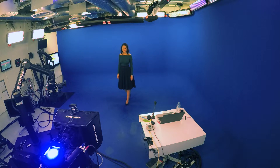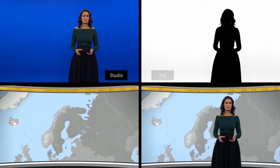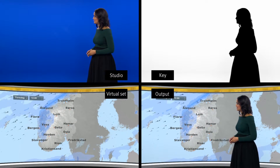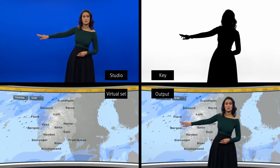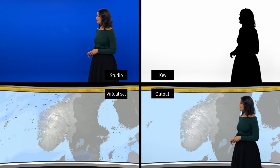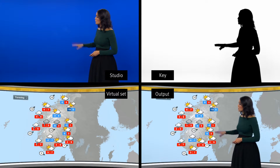TV2 Norway has chosen to use blue for their chroma key wall. We have found that in our small studio we benefit from using a blue screen instead of green, because the spill light bouncing off the wall — it's more acceptable to the audience to have a slightly blue presenter than a slightly green presenter. That being said, a green wall would technically be better for keying, but we have found the blue screen is the solution that works best for us.